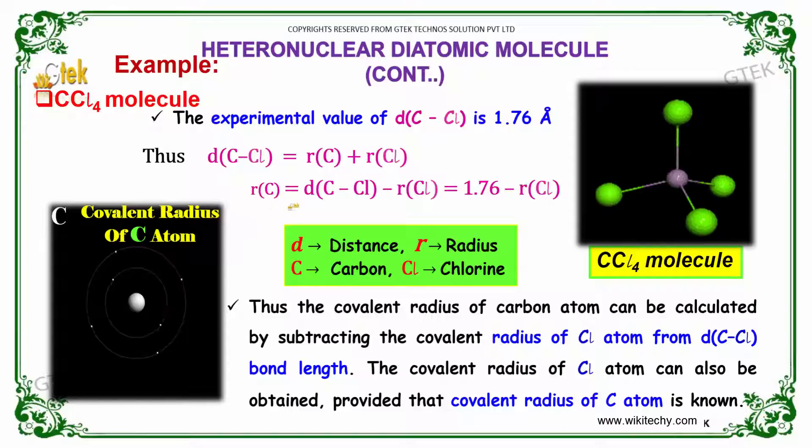Thus, the covalent radius of carbon atom can be calculated by subtracting the covalent radius of chlorine from the bond length. The covalent radius of chlorine atom can also be obtained from the covalent radius of carbon if you know it.